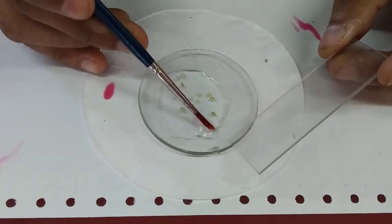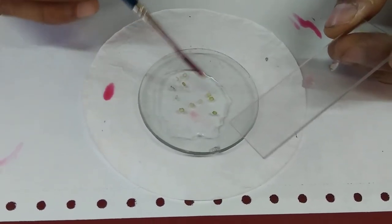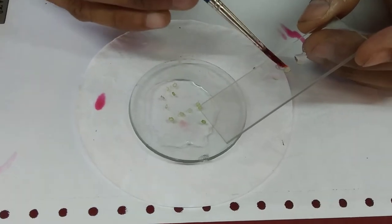Select the thinnest sections and transfer them to a glass slide. Always select two to three sections so that after staining you can choose the best stained section.